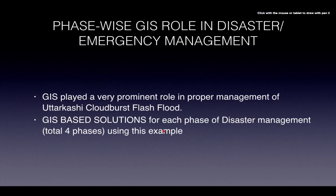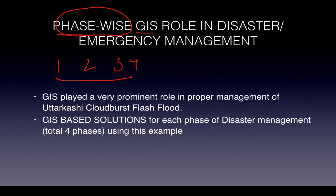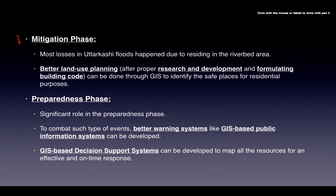There are phase-wise GIS roles in disaster and emergency management. There are four phases that unfold over time. GIS played an extremely important role and reduced the death toll as well as the disaster toll, especially in the Uttarkashi cloudburst flash flood. Using that example, I will shed light on each phase.